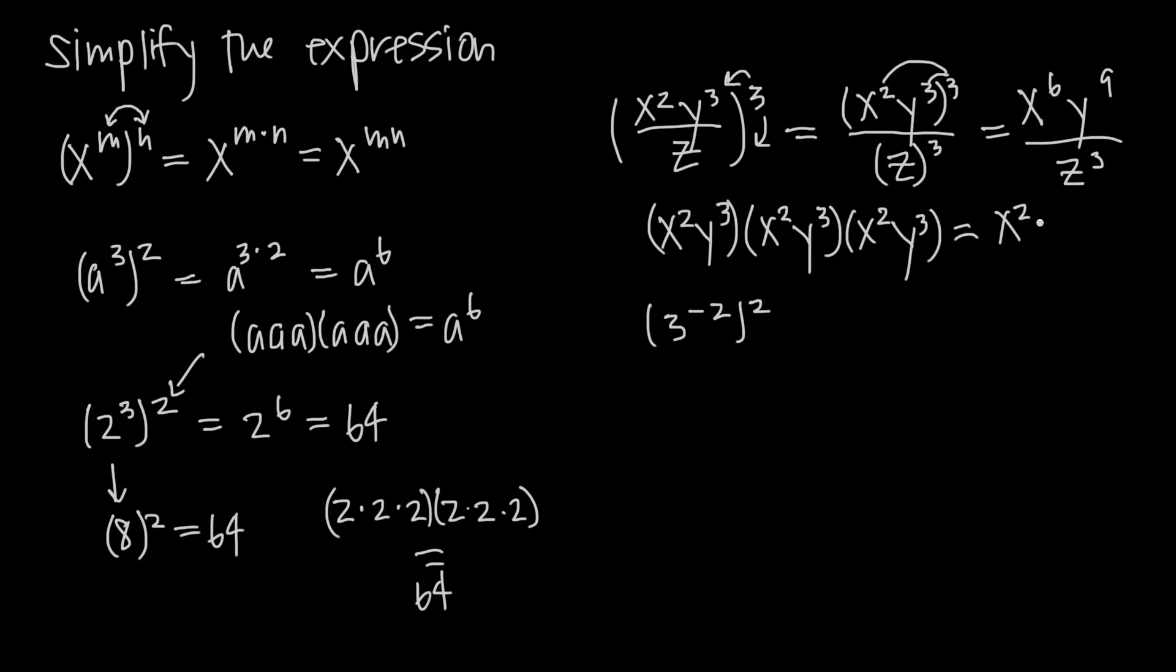We have x squared times x squared times x squared times y cubed times y cubed times y cubed, and if we add up all of our x's, we have x to the sixth times y to the ninth, 3 plus 3 plus 3. So that's another way to get to this numerator if distributing this 3 across the exponents gets a little bit confusing or you forget.